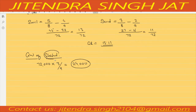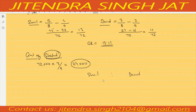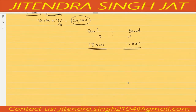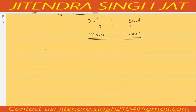Sunil and David will give this 24,000 in their gaining ratio of 13:11. When we distribute 24,000 in 13:11, Sunil will give 13,000 and David will give 11,000. Now let's pass the journal entry. Those who are gaining partners will be debited, so Sunil's capital account is debited by 13,000.